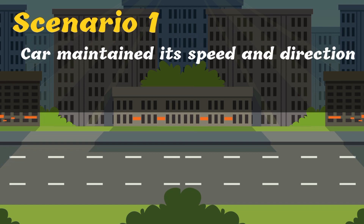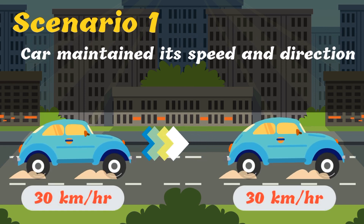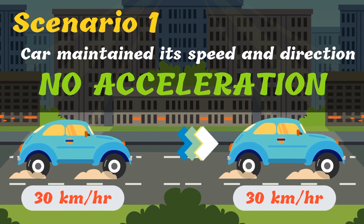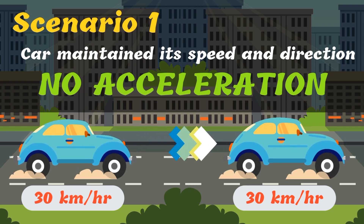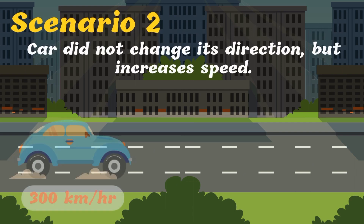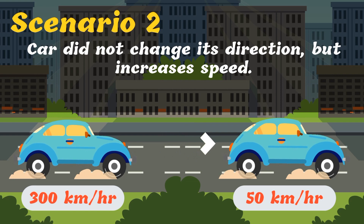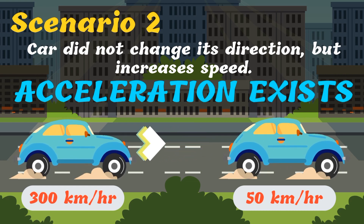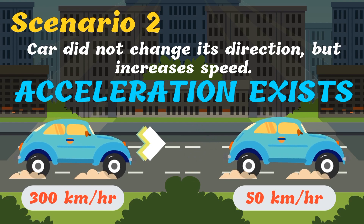Let us have a sample scenario. The car just maintained its speed and direction — is there acceleration or no acceleration? The answer is no acceleration, since the car maintained its speed and direction, meaning there is no change in speed and direction, therefore no acceleration. Next scenario: the car did not change its direction but it increases its speed. Is there acceleration? The answer is yes, there is acceleration, because there is a change in speed.